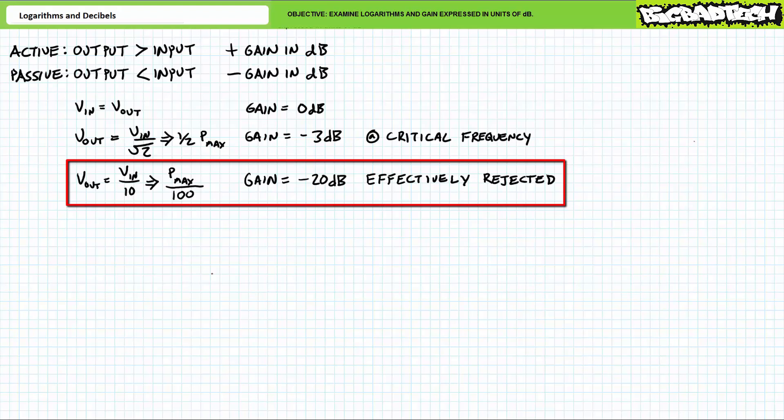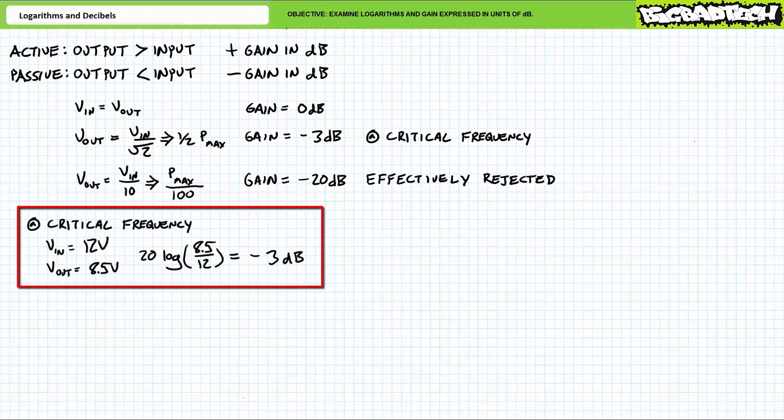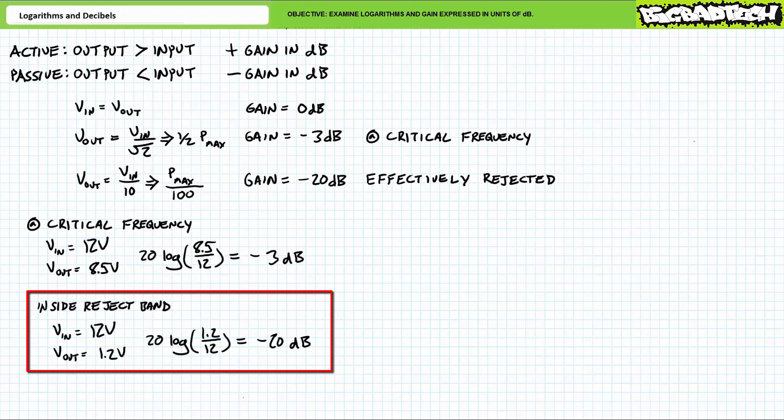Let's do a practical example for the last couple observations. Consider a filter operating at the critical frequency such that a 12 volt input is reduced to 8.5 volts output. 20 log of 8.5 over 12 yields a gain of roughly negative three decibels — we're at the critical frequency and experiencing half power, and 8.5 volts roughly equals 12 over the square root of two, or 70.7%. Consider a filter operating in the stop band where 12 volts input is reduced to 1.2 volts, or one tenth of input. 20 log of 1.2 over 12 yields a gain of negative 20 decibels. When output voltage is only 10 percent of input voltage, power would only be one percent of maximum, so we're not concerned about it.